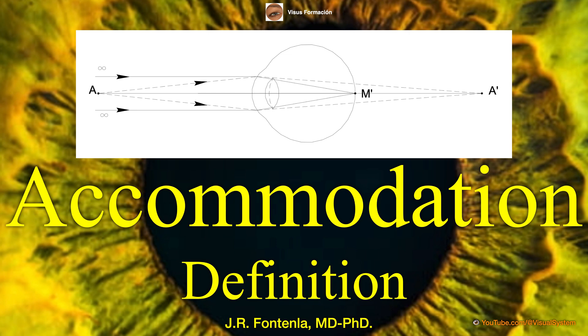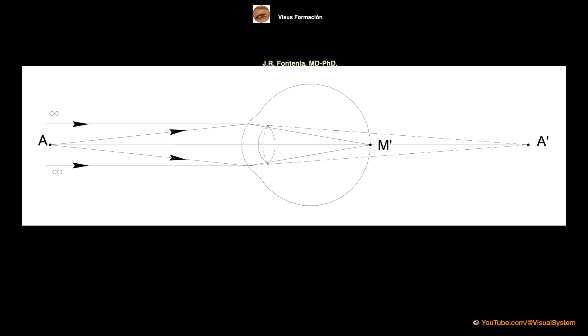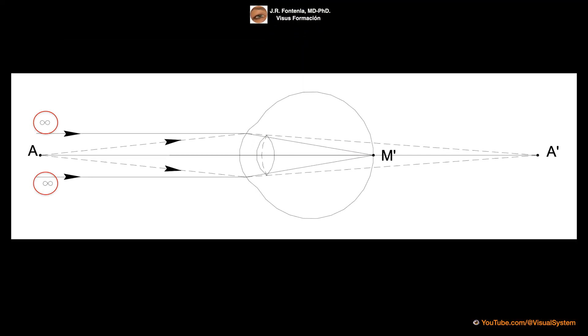Accommodation is the property of the eye to focus at different distances. In the emmetropic eye, parallel rays from an object at infinity are focused on the retina.